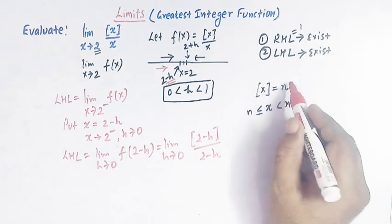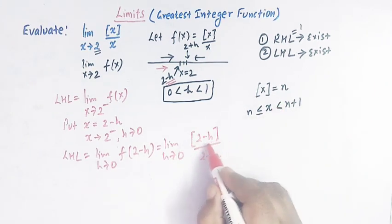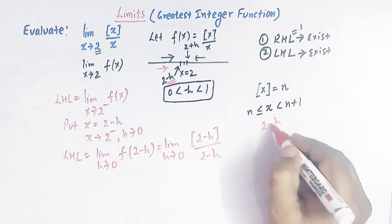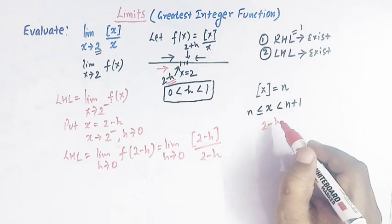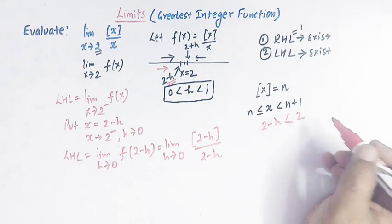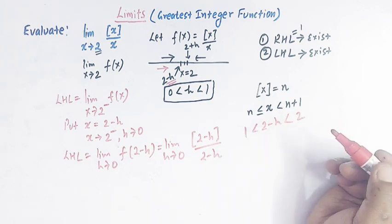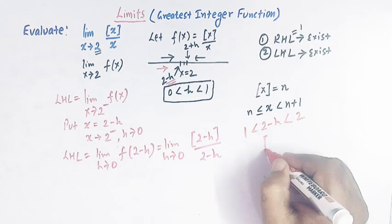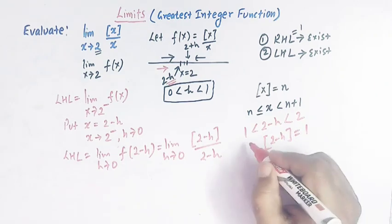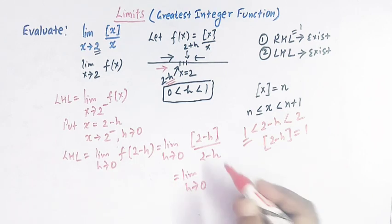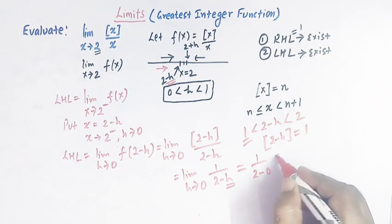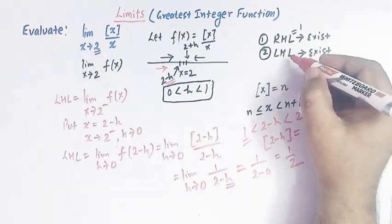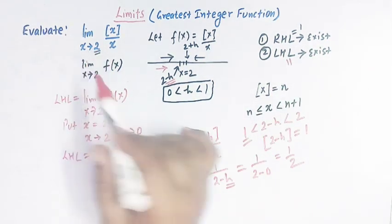Once again we use the definition of the greatest integer function. Since h is a positive quantity lying between 0 and 1, subtracting h from 2 gives a number slightly less than 2 but greater than 1. So 2 − h lies between 1 and 2, and therefore the greatest integer of (2 − h) equals 1. So we have limit h tends to 0 of 1 over (2 − h). Replacing h by 0 gives 1 over 2, which equals one-half. So the left-hand limit when x tends to 2 is one-half.